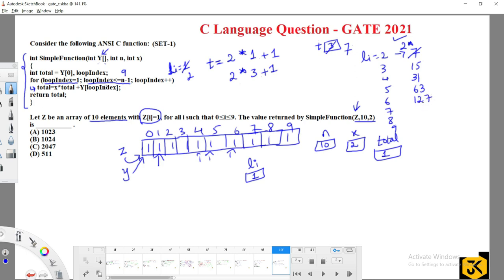127 into 2 plus 1, 255. 255 into 2 plus 1, obviously you are going to get 511. 511 into 2 plus 1, 1022 plus 1, 1023. Meaning that for the loop index value 9, you are going to get the value as 1023. Total value as 1023.